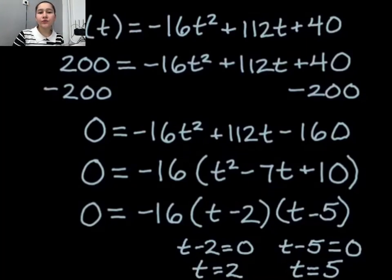So after solving our equation, what we end up with are two different answers: t equals 2 and t equals 5. So let's go back to our drawing for a second and look at what this means in terms of the context of the problem.